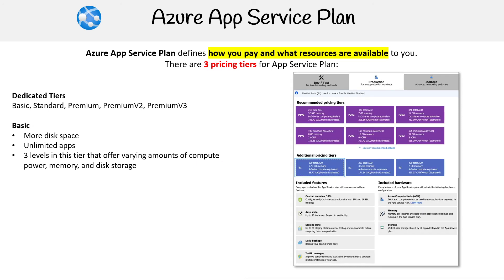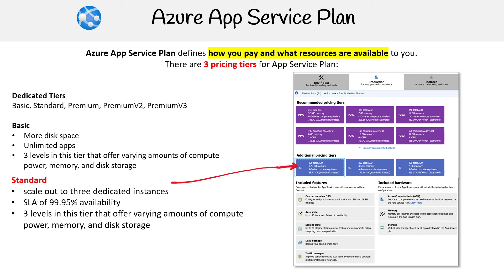The next thing over is Standard — we had to switch tabs there onto the production tab. Notice the terminologies don't really match the tiers. With Standard, you can scale out to three dedicated instances, it has an SLA of 99.95% availability, and three levels in this tier offering varying amounts of compute power, memory, and storage.